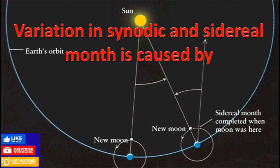When the moon revolves around the earth, at the same time the earth also continues its revolution in its orbit. As a result, the moon has to travel slightly more distance than usual to complete its cycle.